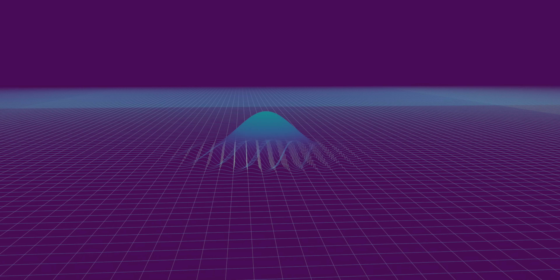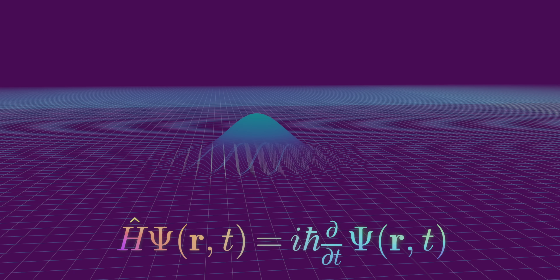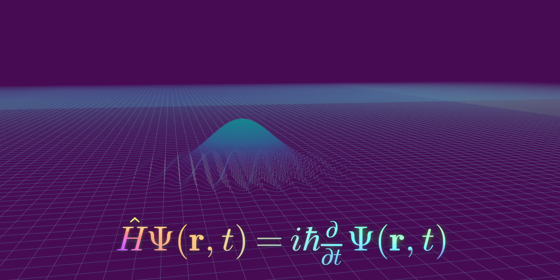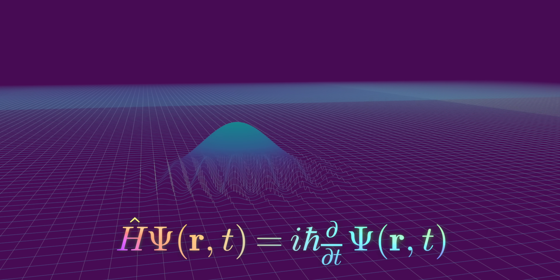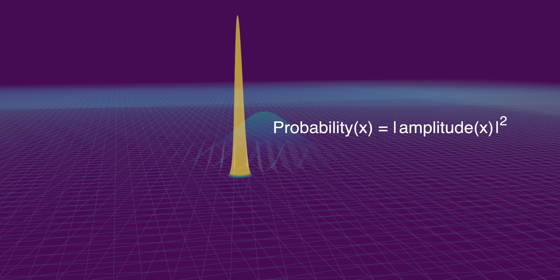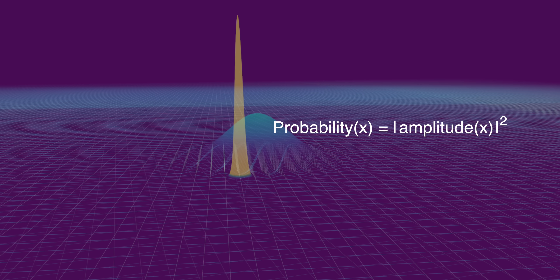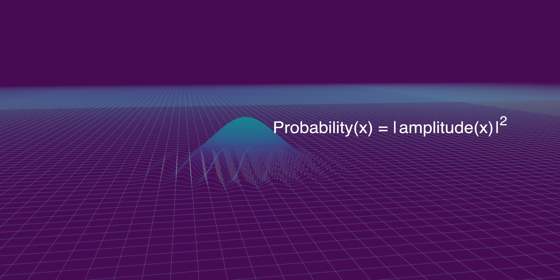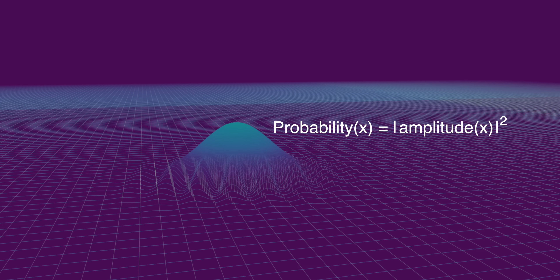The way quantum mechanics came to be understood — and the way I learned it — is that there are two sets of rules. When you're not looking, the wave function simply evolves according to the Schrödinger equation. But when you are looking, when you make a measurement, the wave function collapses suddenly and irreversibly. And the probability of measuring any particular outcome is given by the amplitude of the wave function associated with that outcome, squared.